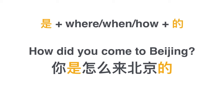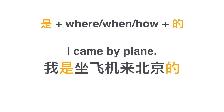我们是什么时候认识的 — 我们是2008年3月21号认识的. More example: how did you come to Beijing? 你们是怎么来北京的. I came by plane — 我是坐飞机来北京的. 坐飞机 means to sit on/take the plane, 来 means come, 北京 is Beijing. 我是坐飞机来北京的 — I came to Beijing by plane.